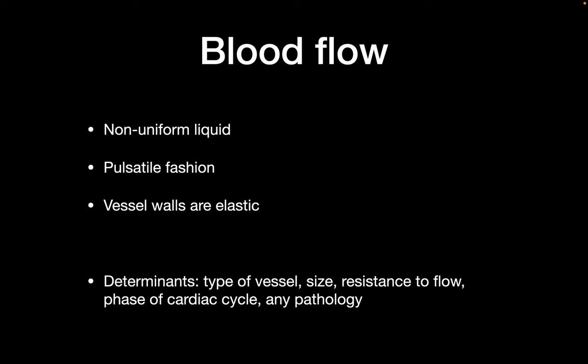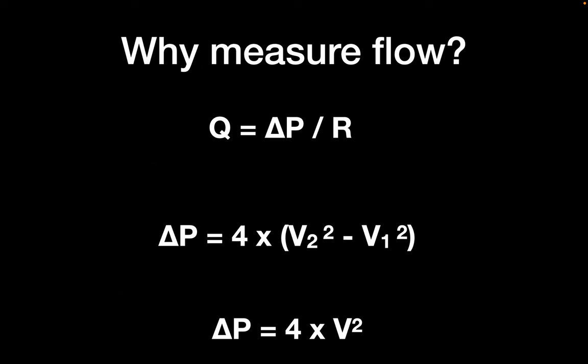Flow can be measured with the ultrasound machine. Once we know flow characteristics — especially velocity — we can use that to calculate intracavitary or intravascular pressures, which is very important for medical assessment. This is why measuring flow is important, also to assess cardiac output, and it is very important in the critical care arena. We'll come back to these equations a lot in future lectures.